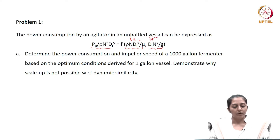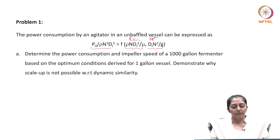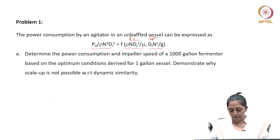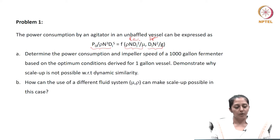Based on this correlation, we need to determine the power consumption and impeller speed of a 1000 gallon fermenter based on the optimum conditions derived using a one gallon vessel. We also need to demonstrate whether scale up is possible or not with respect to dynamic similarity. Let us first look at the first part of the problem.